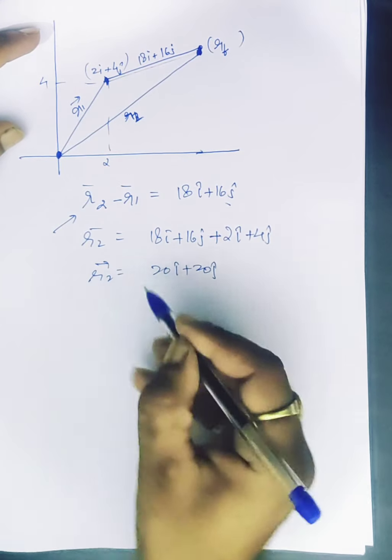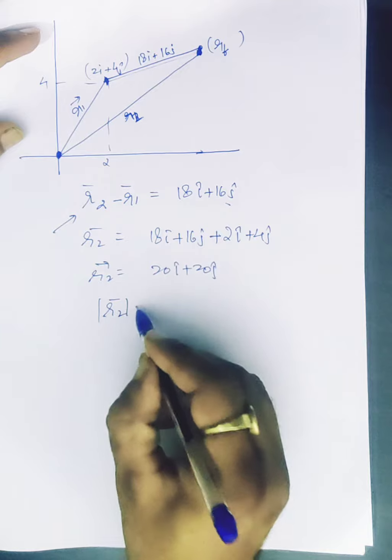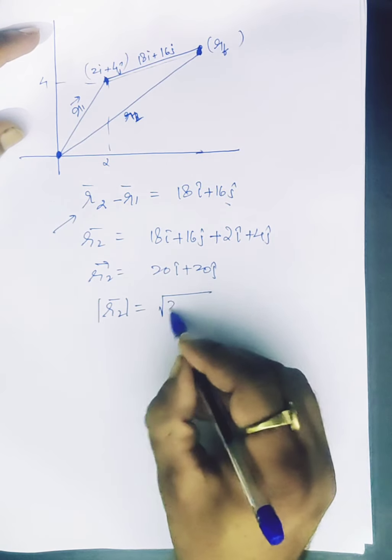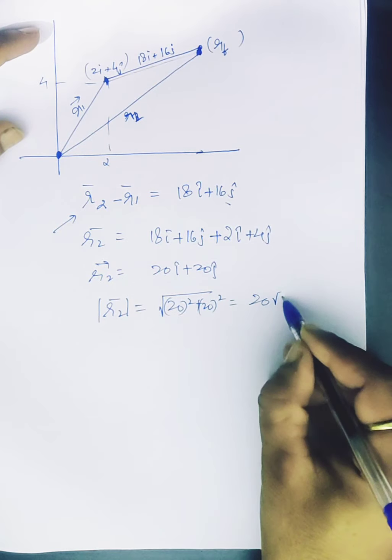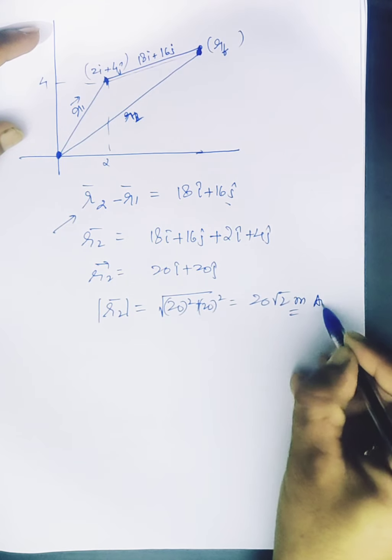So r2 and then finally r2 is the distance of scalar quantity so 20 square plus 20 square is equals to 20 root 2 meters. That is the answer to the question.